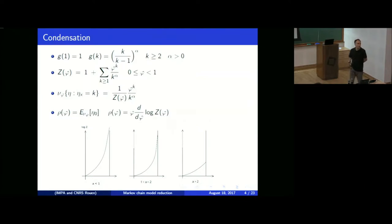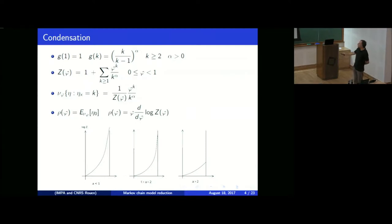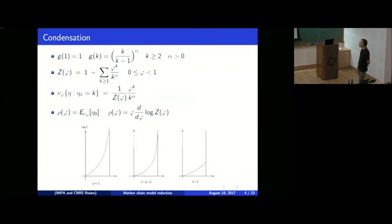The first question you might ask about this model is about the invariant measures. Let me fix a parameter phi between zero and one. Define Z by this series, which is a normalizing constant. I claim that if you place k particles at each site with this probability, independently at each site, then this product measure is an invariant measure for the model. So you have a family of invariant states indexed by phi.